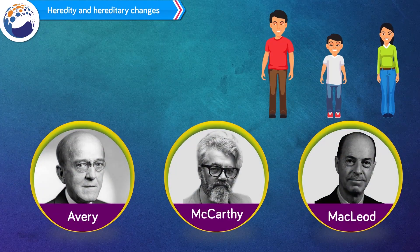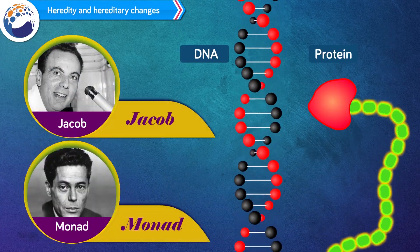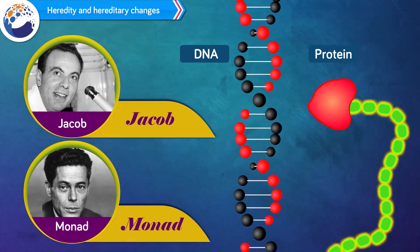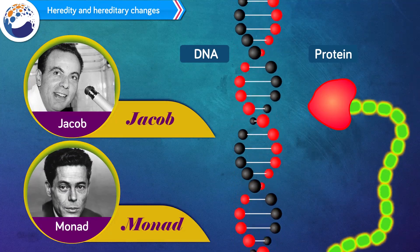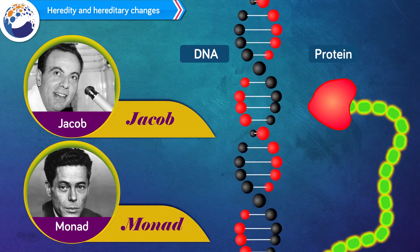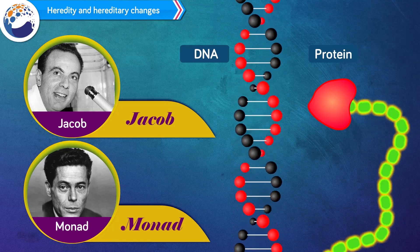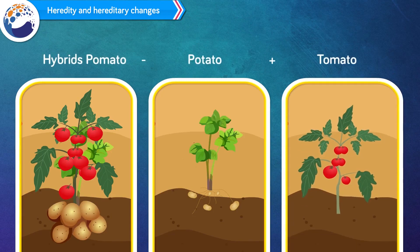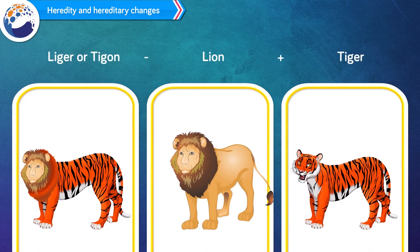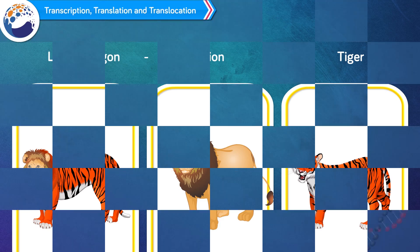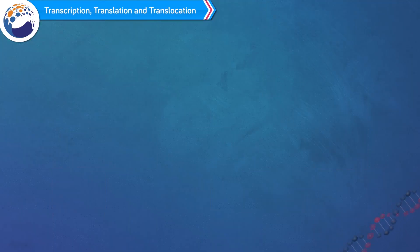Scientists Avery, McCarthy and McLeod proved that all living beings have DNA as genetic material, except viruses. It was Jacob and Monod who proposed a model for the process of protein synthesis with the help of DNA, which helped in uncovering genetic codes in DNA. The science of heredity helps in the field of diagnosis, production of hybrid varieties of animals and plants, treatment and prevention of hereditary diseases, and in industrial processes including transcription, translation and translocation.